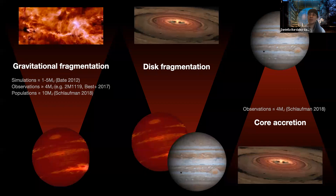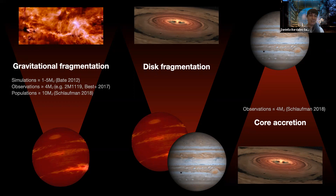From observations, we have seen objects that likely have four Jupiter masses. For example, 2M1119 is a binary system of brown dwarfs. We know they're about four Jupiter masses because they're part of a moving group; otherwise, ages are really hard to figure out for brown dwarfs. So we think they're four Jupiter masses.